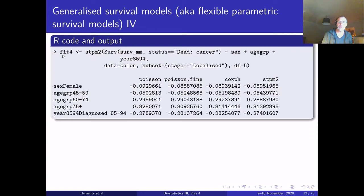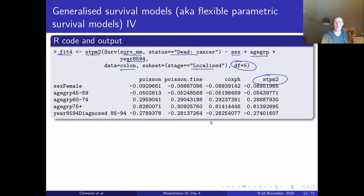Here is some code creating a fit object using stpm2 with survival time in months for cause-specific death, adjusting for sex, age group, country, and year of diagnosis from the colon data, restricted to localized cancer, with five degrees of freedom for the baseline. Comparing the coefficients from stpm2 with Cox, Poisson fine, and Poisson, the hazard ratios from stpm2 are very similar to those from the Cox model and Poisson model.